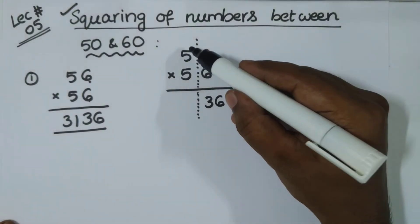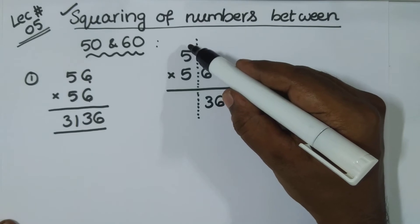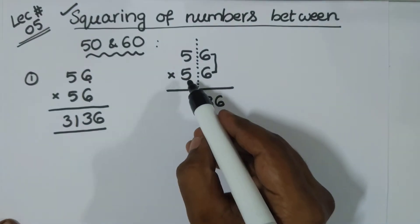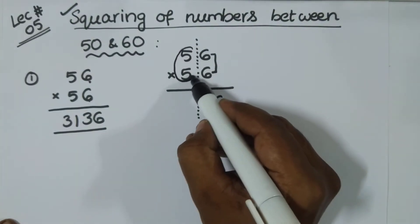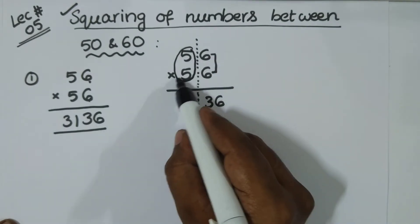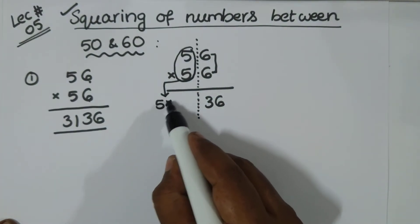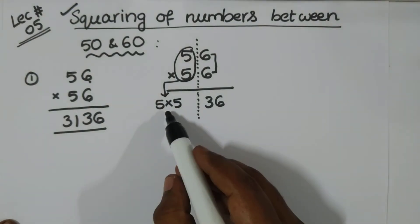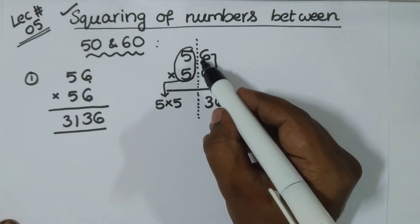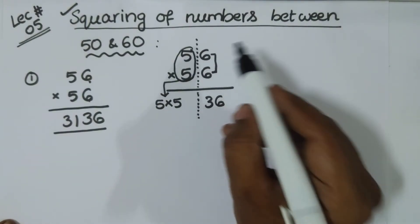Now, this is not 5 multiplied by its next number 6. Now, this time what you do. Now, you have to multiply these two digits. So, multiply them first. So, multiply these two digits and add with any one. Just add with any one. That's it.